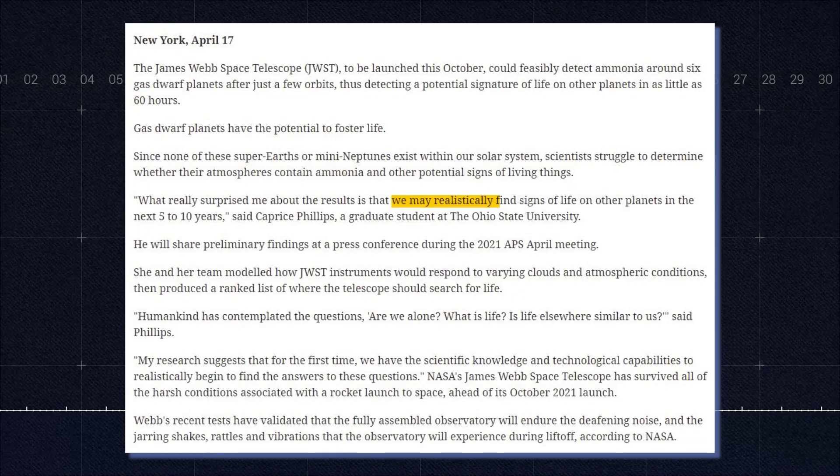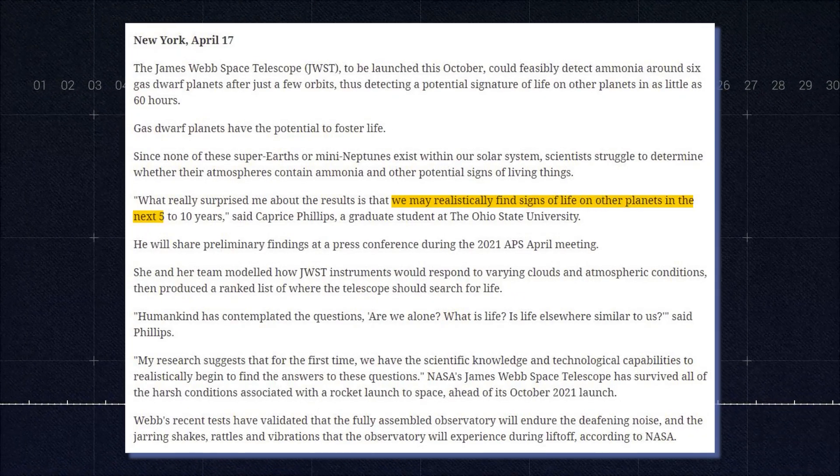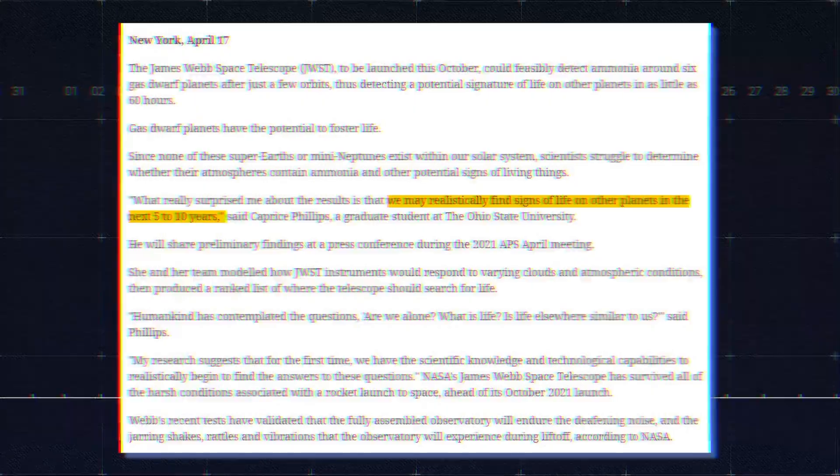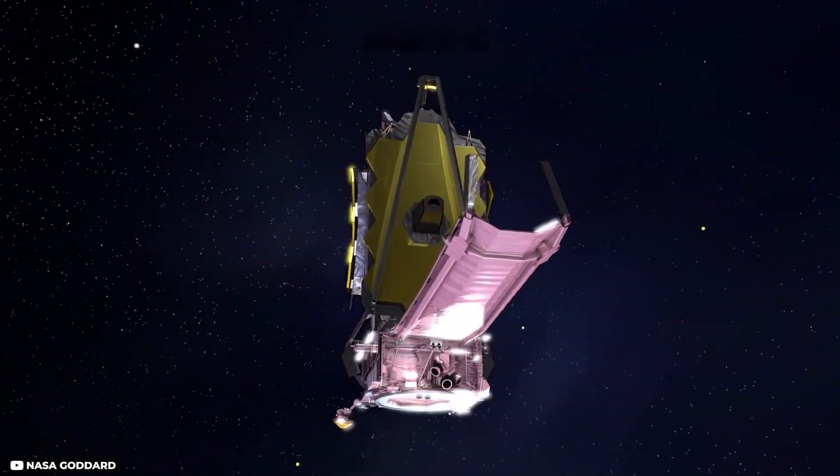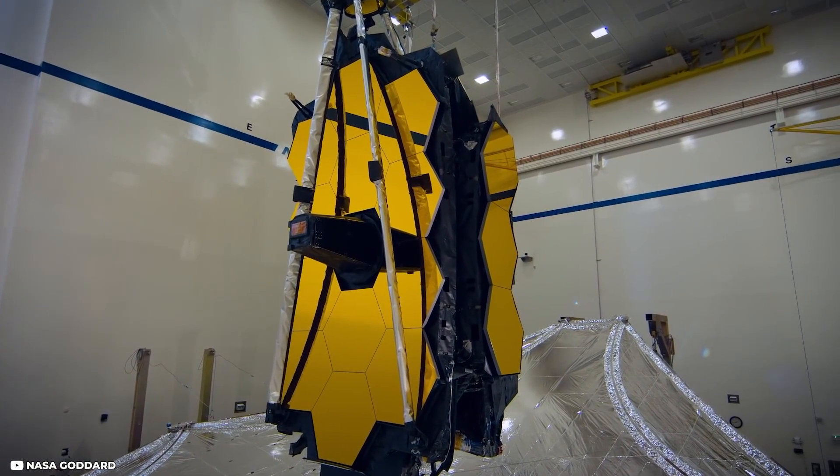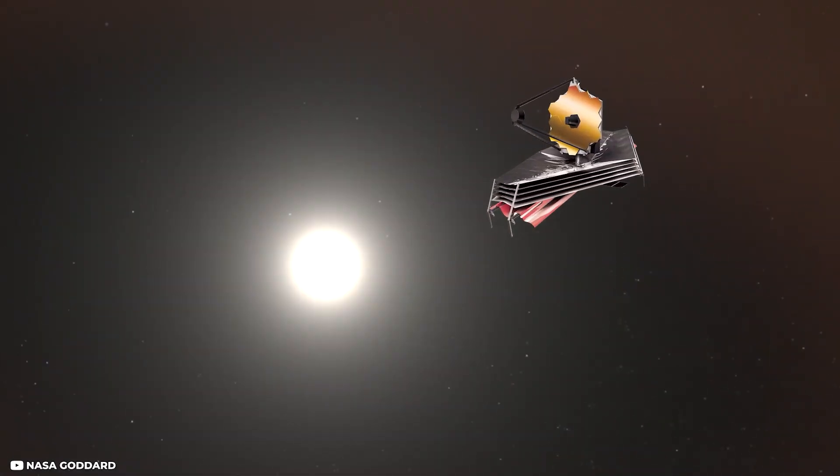According to graduate student Caprice Phillips, the findings of her study indicate that we may realistically find signs of life in the next five to ten years. Phillips calculated that the James Webb Space Telescope, which will launch in October, could detect ammonia around gas dwarf planets after only a few orbits.